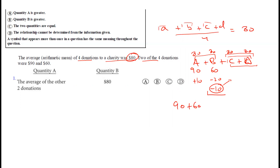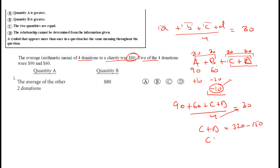Algebraically: (90 + 60 + C + D) / 4 = 80, so C + D = 170. The average of C and D is 85. Since 85 is more than 80, Quantity A is greater than Quantity B — option A is correct.